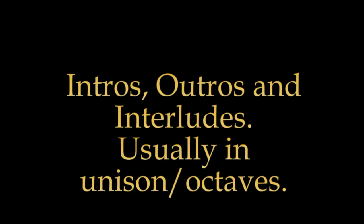First is intros, outros, and interludes, which in commercial horn music are usually in unison or octaves. Harmonized melodic lines that you find in jazz and big band writing is not that common in commercial music. So here are some examples of intros, outros, and interludes. Here's our first example of an introduction. That's all unison octaves.